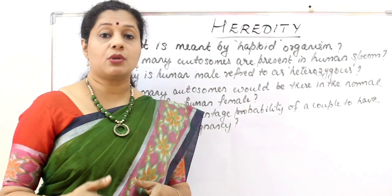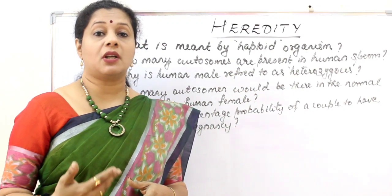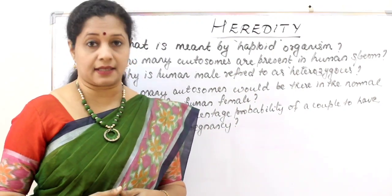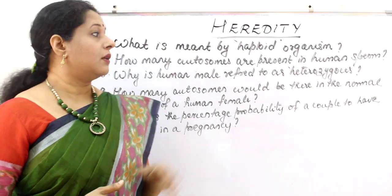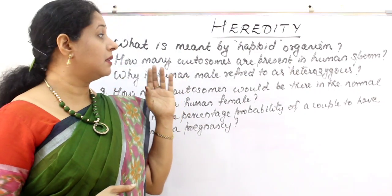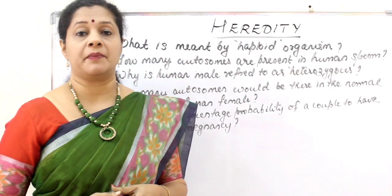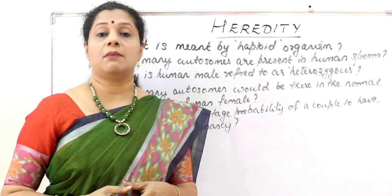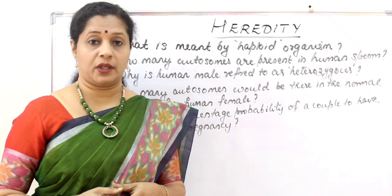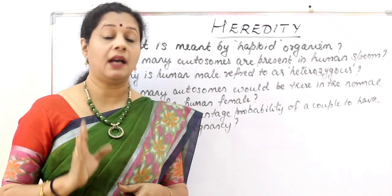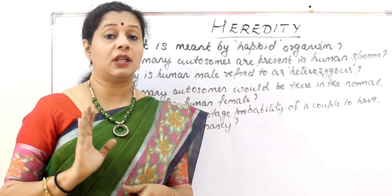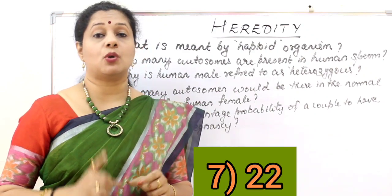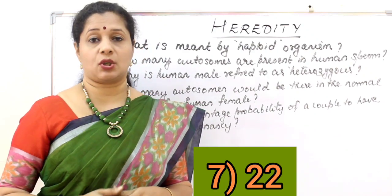Autosomes are the chromosomes that control our general characteristics other than sex. Human sperm is haploid with 23 chromosomes total — 22 of these are autosomes and one is the sex chromosome.